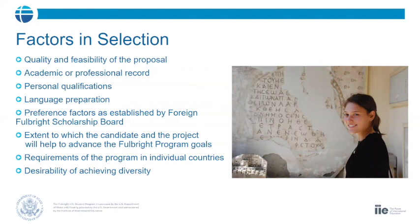Selection is made on the basis of the quality and feasibility of the proposal, the academic or professional record of the student, personal qualifications, language preparation, and preference factors established by the Fulbright Foreign Scholarship Board. The extent to which the candidate and project will help advance Fulbright's aim of promoting mutual understanding and achieving diversity is also key. Refer back to Fulbright's goals and the language they use on their website — make sure you're speaking their language and know what their expectation is for scholars.